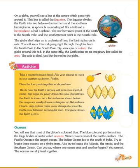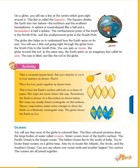You will see a thin rod going through the globe from the North Pole to the South Pole. This rod connects the two poles — North Pole and South Pole. You can spin or rotate the globe around this rod, so it is made for the spinning purpose only.